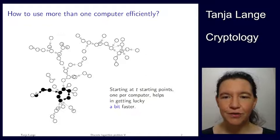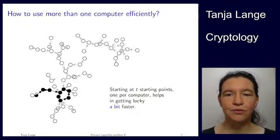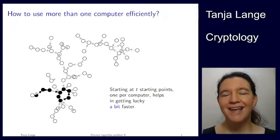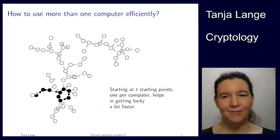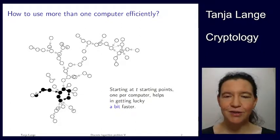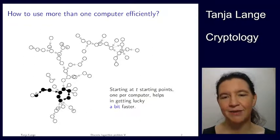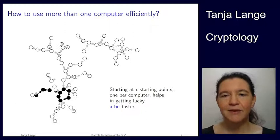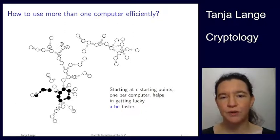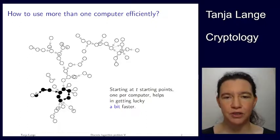Now I've seen how to use the Pollard rho method to compute discrete logarithms. Normally when you're an attacker, you have more than just one laptop. Having a bigger, faster computer will get a bit better clock speed, but what we really want is to use more than one computer, or more than one core on your computer, and to use this efficiently.